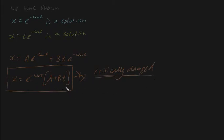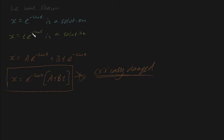A few of you may be wondering why we chose the values that we did — why we guessed whether t e to the minus omega n t was a solution. It seems quite arbitrary, and in a way it is. If you're not fully satisfied with why we guessed and checked this, or why this is the only solution, I recommend you check out the link provided.